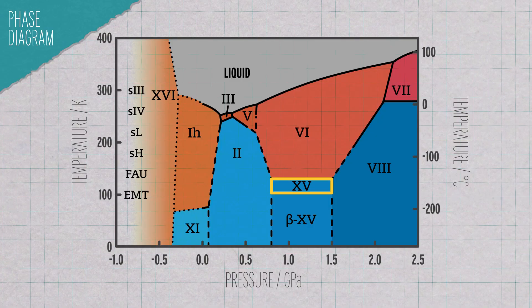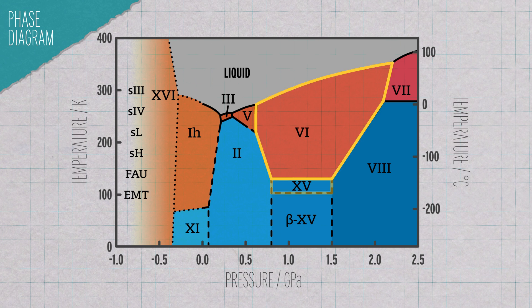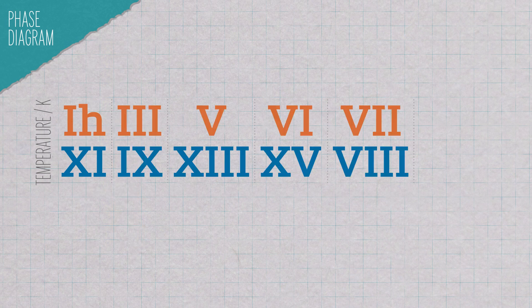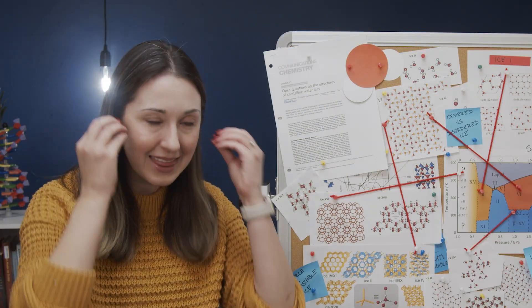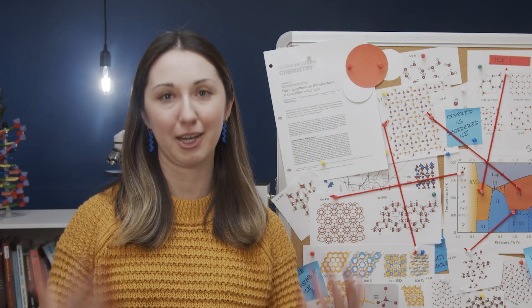For example, ice 15 is an ordered form of ice 6. They're right below the other. There are six pairs that we know about right now. For each of these pairs, you're lowering the temperature and therefore you're lowering the entropy, so you're getting more order. I love when things like that make sense. Like that made sense in my brain when I read it.